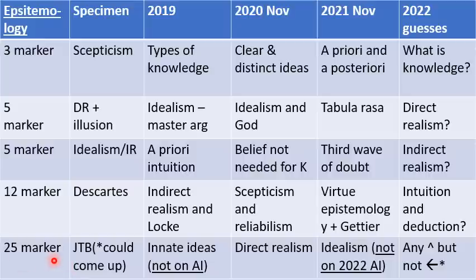It's really the 25 markers that we're most interested in, especially this year, because you get the most marks for them, but also because they're the ones that are going to be easiest to predict. No money back guarantee — don't track me down and shoot me if I'm wrong about any of this. These are just mildly informed guesses.